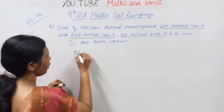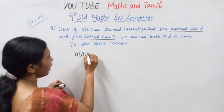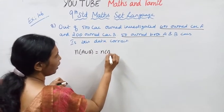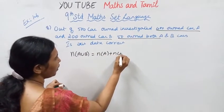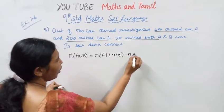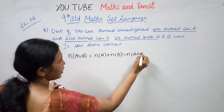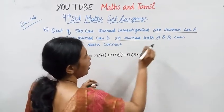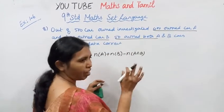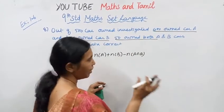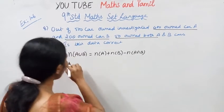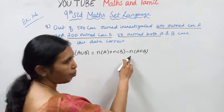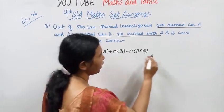This is the formula: N(A∪B) = N(A) + N(B) - N(A∩B). Since there is no Car C, we use this formula: N(A∪B) = N(A) + N(B) - N(A∩B).